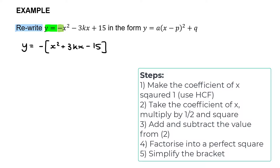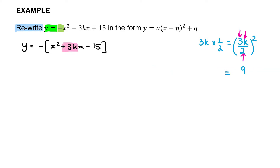Step two: take the coefficient of x, which is +3k, go to the side of the page, multiply 3k by a half to get 3k/2, then square the entire expression. Make sure when you square it you apply the square to the 3, the k, and the 2 in the denominator, giving us 9k²/4.